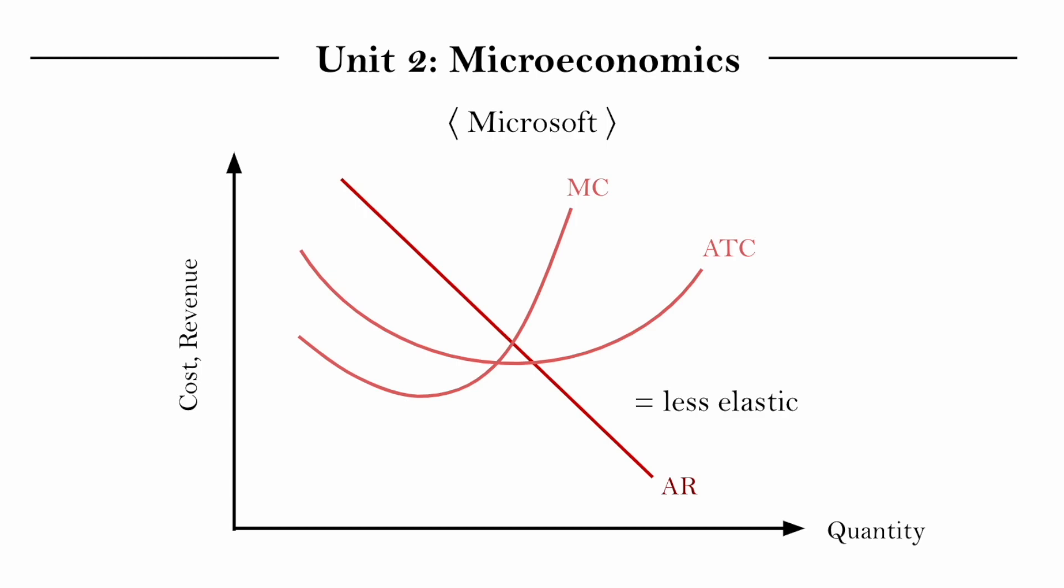Now, why would the demand be less elastic? Because in a monopoly, we have highly differentiated products, which means since you can't get something like this cheaper from another firm, you'll likely continue to buy from this firm regardless of an increase in price.